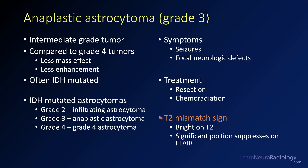The T2 mismatch sign is something that's been published relatively recently but may show up in a testing scenario. This is when you have a tumor that is very bright on T2 but has a significant portion that suppresses on FLAIR. This is a pretty specific sign for an IDH-mutated astrocytoma.